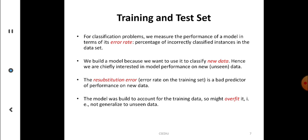For classification problems, we try to measure the performance of the model in terms of error rate — the percentage of incorrectly classified instances. We build a model because we want to classify new, unknown instances. It is very important to understand what percentage of unknown instances can be correctly classified. The resubstitution error is the error rate on the training set, and it is a bad predictor of performance on new data.